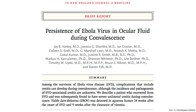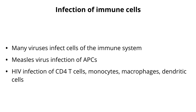In addition, many viruses infect cells of the immune system. We talked about how measles virus infects antigen-presenting cells — that's certainly going to suppress the immune response. HIV infects many cells of the immune response. If you infect the cells of the immune system, that's a great way to allow yourself to persist — it makes perfect sense.